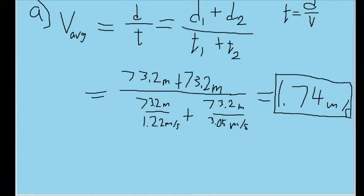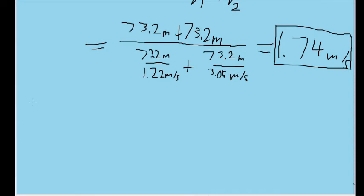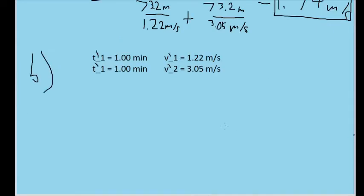We still have another part of the problem to do, however. In the second part of the problem, once again, we're given information about two segments of a person's running motion. Except in this case, we are given the time for both segments. We are not given the distance for both segments.